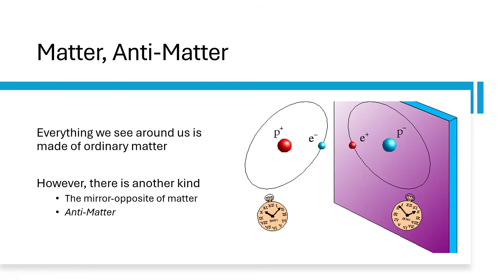Very rare in the common world, called antimatter, which is the mirror opposite, where the nuclei are negatively charged, containing antiprotons, and the antielectrons — which we also call positrons; they have their own name because they're so important — are orbiting around, creating antiatoms.